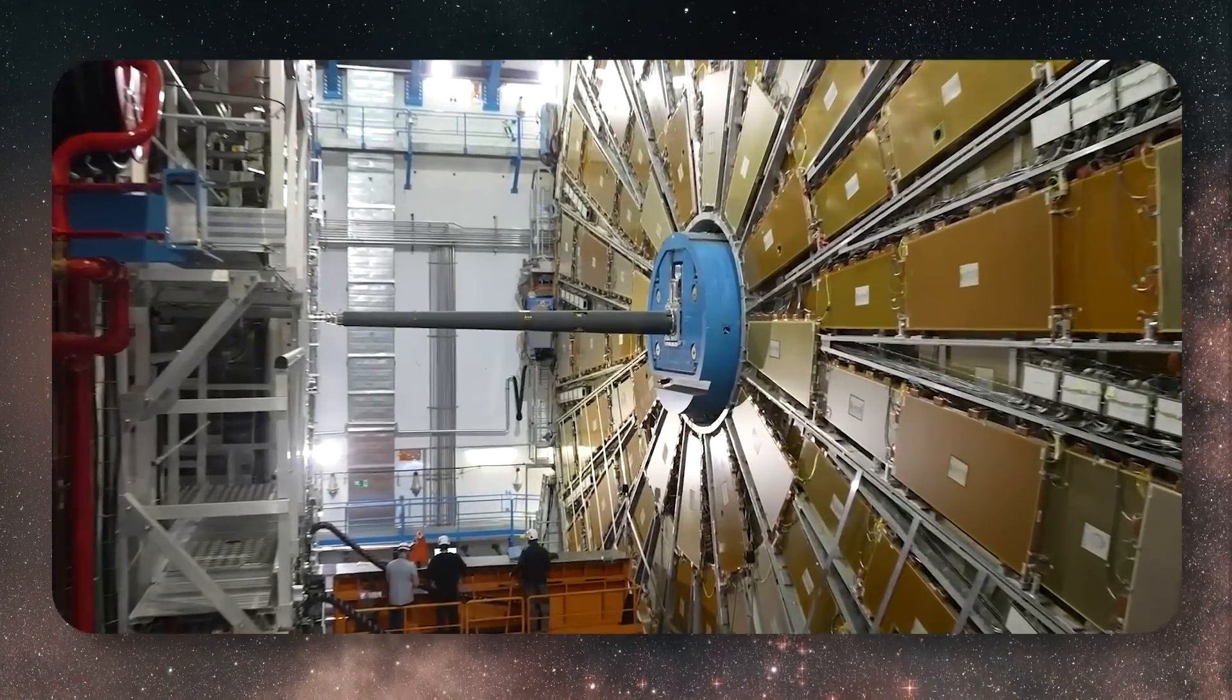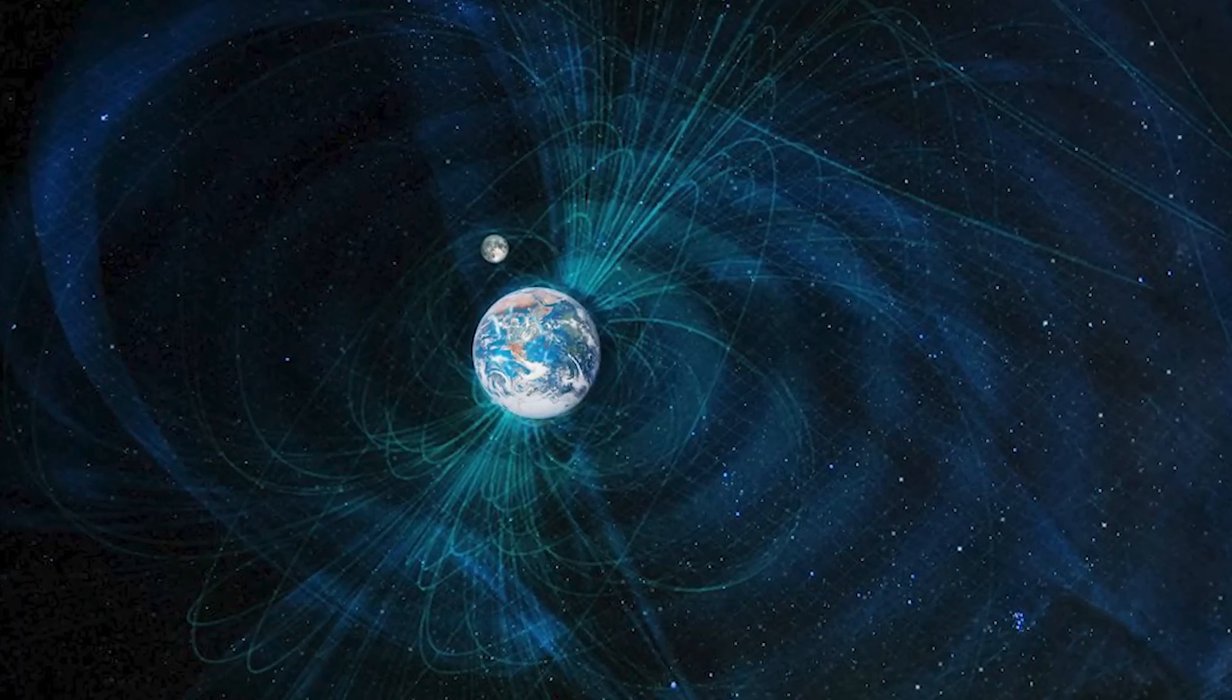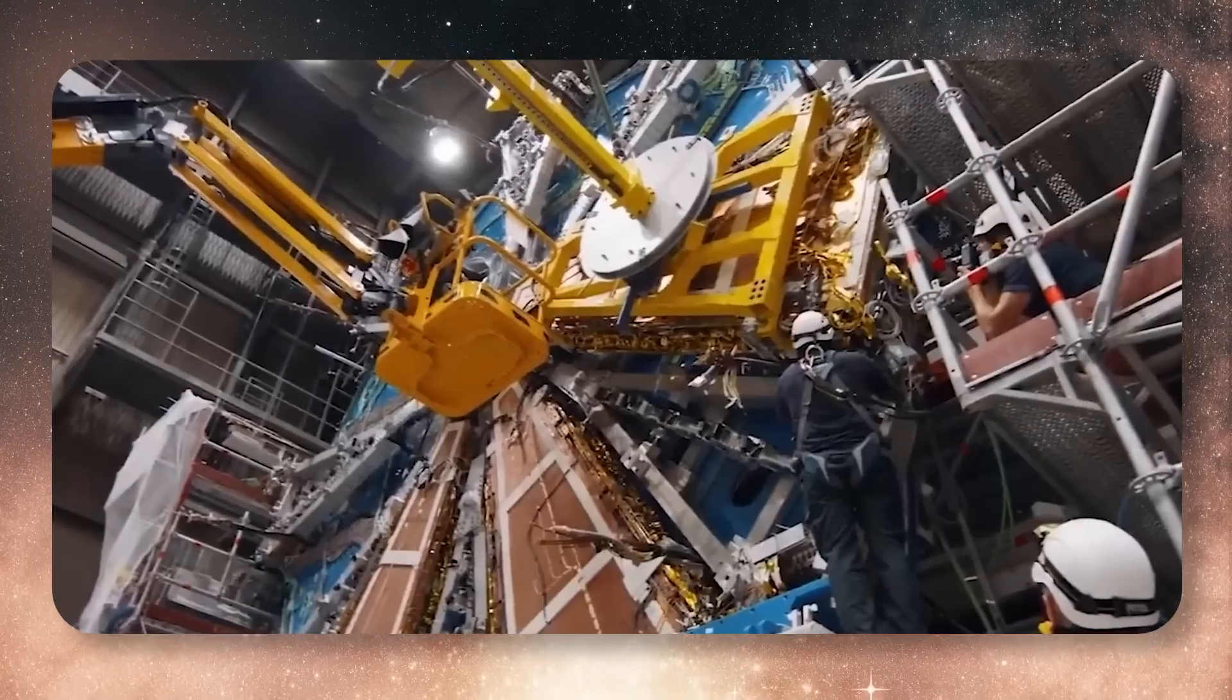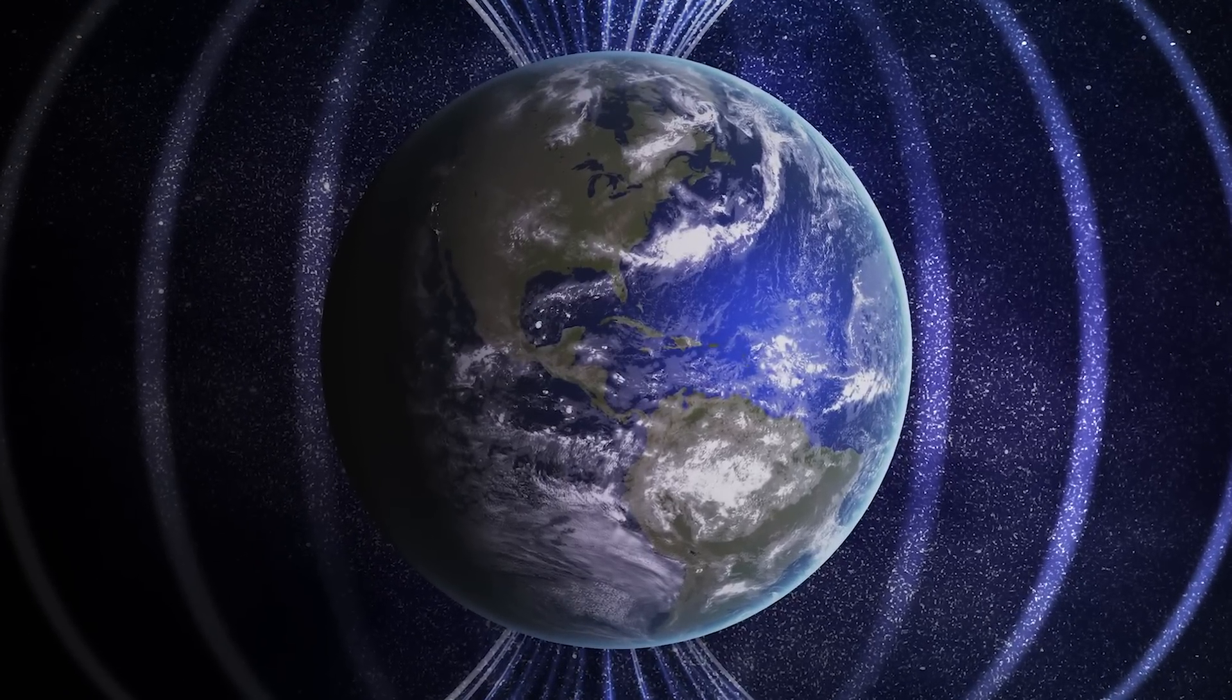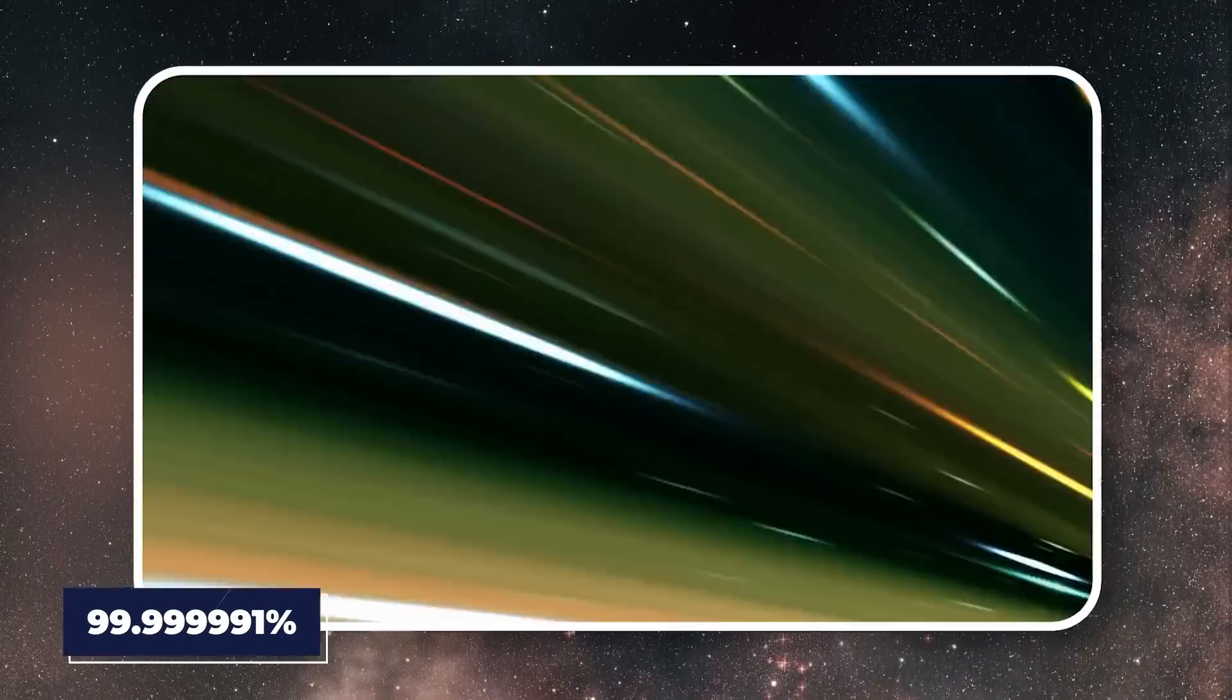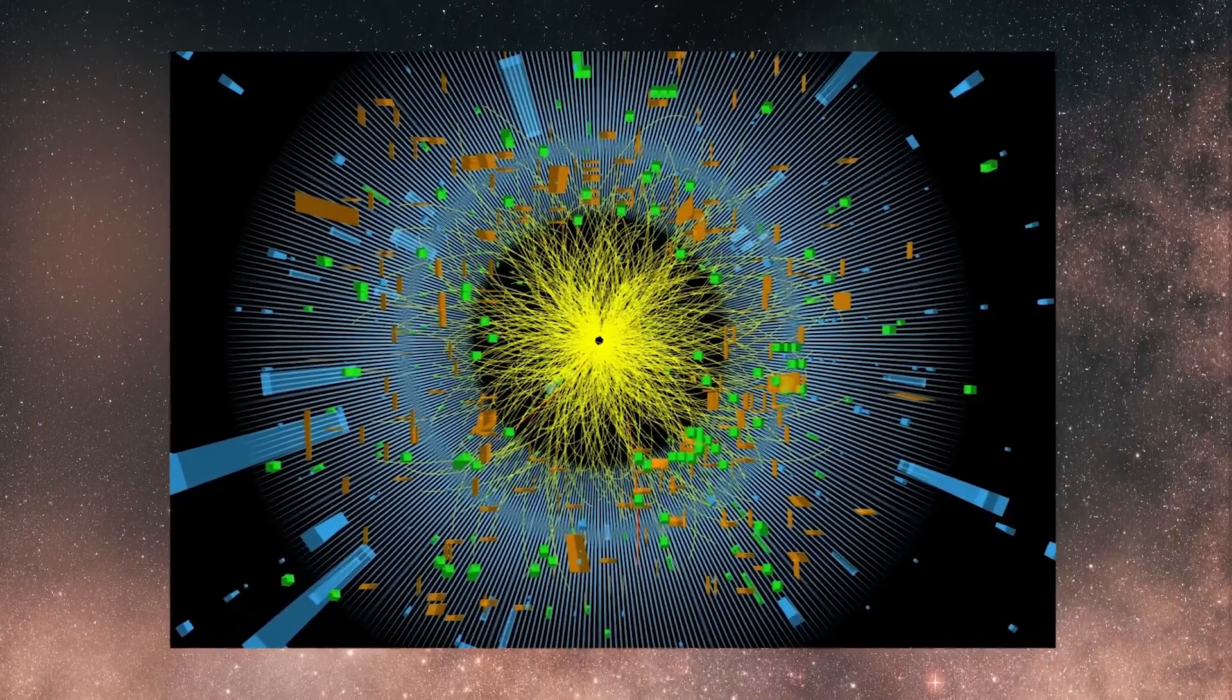This is possible thanks to extremely powerful electromagnets that create a magnetic field inside the accelerator, which is over a thousand times stronger than the Earth's natural magnetic field. Some people were worried that generating such a strong magnetic field might affect local electronics and even the Earth's magnetic field. When these particles reach their maximum speed, which is 99.9999991 percent of the speed of light, they are made to collide with each other.